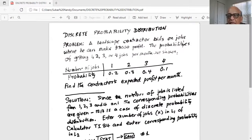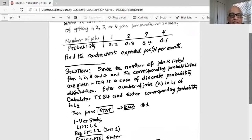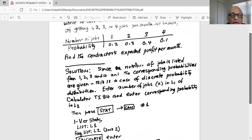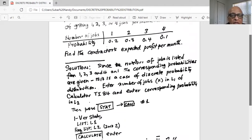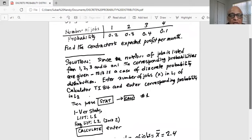So what do we do? Since the number of jobs is listed from one, two, three, and four and the corresponding probabilities are given, this is a case of discrete probability distribution.